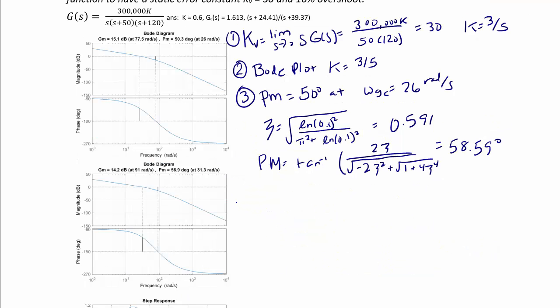Step four, the compensator required angle is phi equal to the desired phase margin minus the uncompensated phase margin plus 5 which equals 13.59 degrees. Then the attenuation factor alpha is equal to 1 minus the sine of phi over 1 plus the sine of phi which is equal to 0.62.